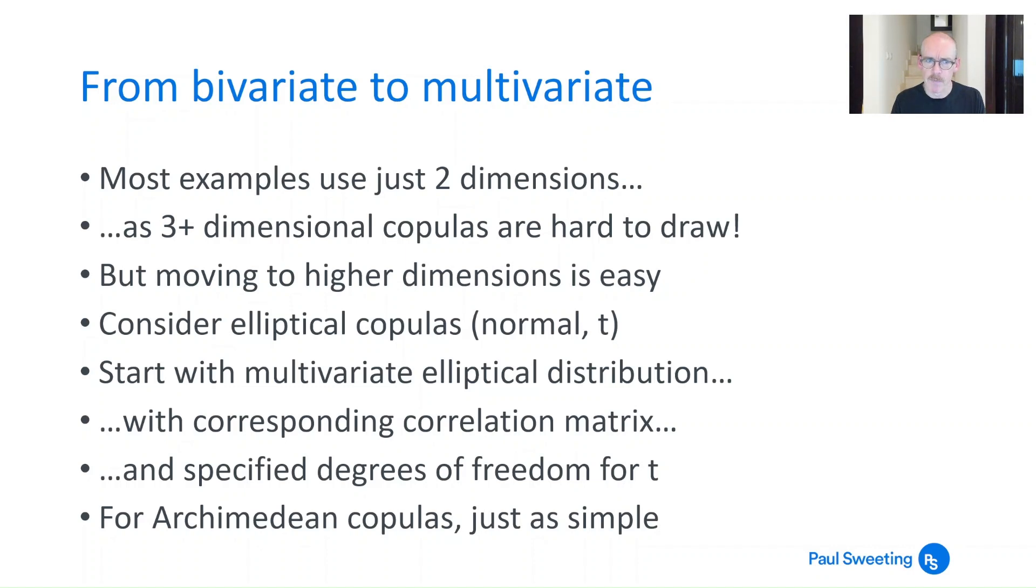If you think about an elliptical copula like a normal or a t copula, instead of having a two-dimensional, so just two variables, you might have a multivariate elliptical distribution, three or more variables, and the corresponding correlation matrix which is no longer just a two by two matrix but could be three by three, five by five or whatever, with all of the correlations between the different variables included in that matrix and then specified degrees of freedom for whatever that distribution you're looking at is.